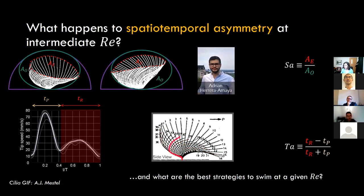For temporal asymmetry (TA), we track the tip of the comb through one beat cycle — which shows a peak at the power stroke and a different profile for the recovery stroke. We defined TA so that higher TA means a more asymmetric stroke, and lower TA means a more symmetric stroke. We're interested in how spatial and temporal asymmetry vary across Reynolds numbers in the natural system and what might be a good strategy to combine the two to maximize performance.